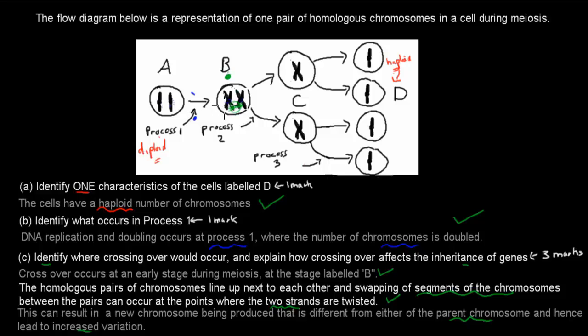That means that there's more variation. So the last part was just there's more variation because of that crossing over. We've got three marks out of three for that. Just saying first where it happens and what it is, and then how that leads to increased variation. Or that it just leads to increased variation. Just make that statement.